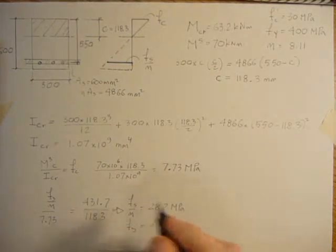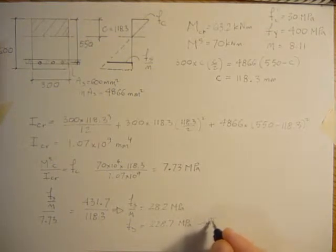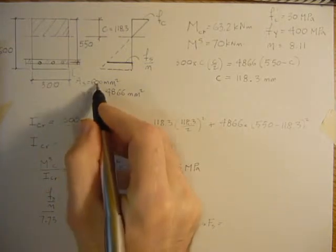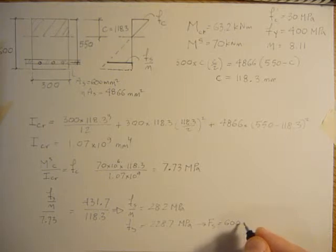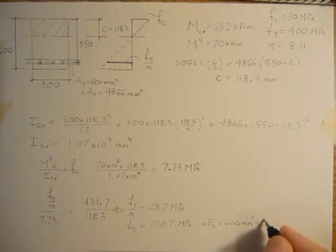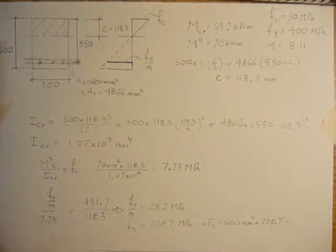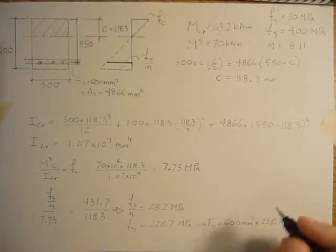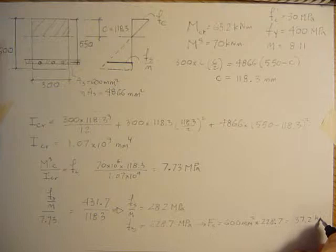So the force in the steel will just be the area of the steel, 600 millimeters squared, times the stress 228.7. That's going to be 137.2 kilonewtons.